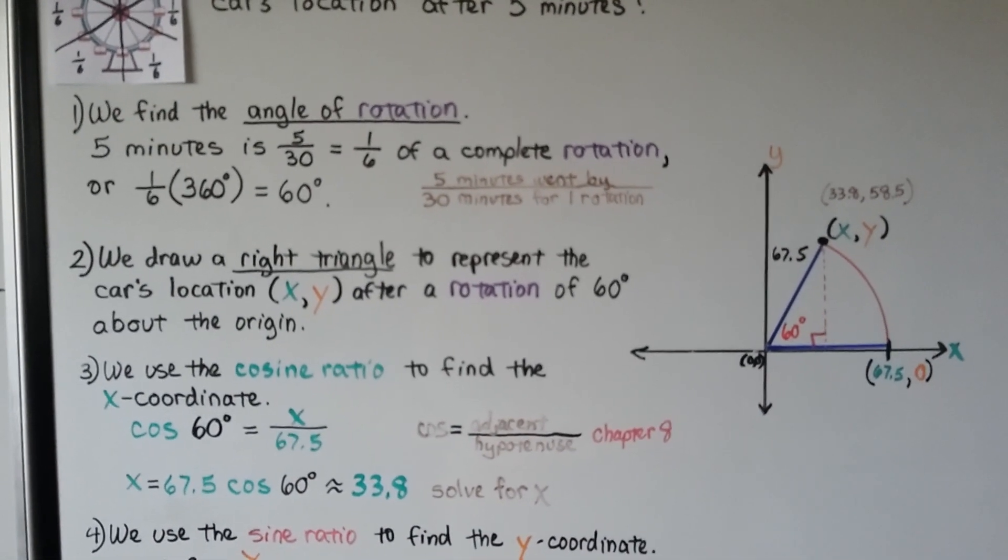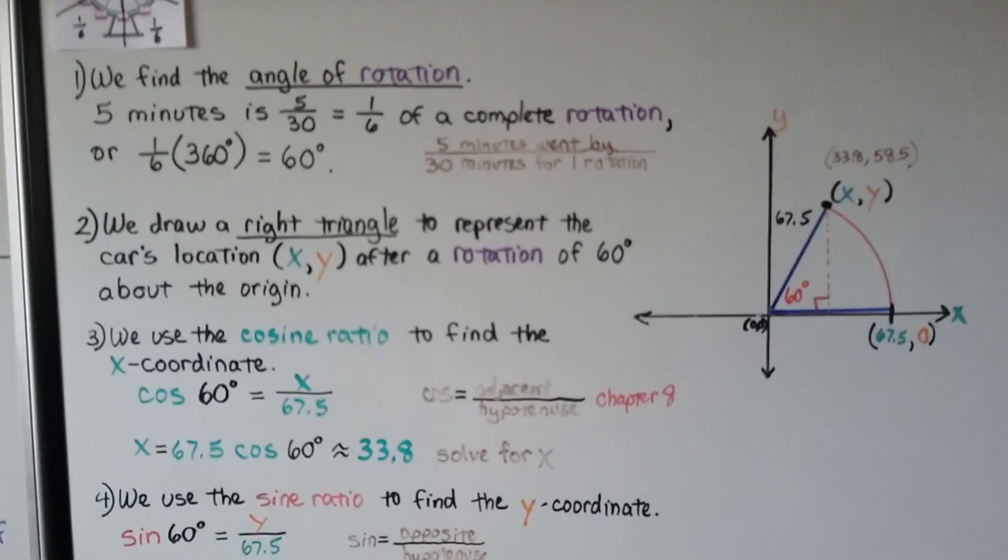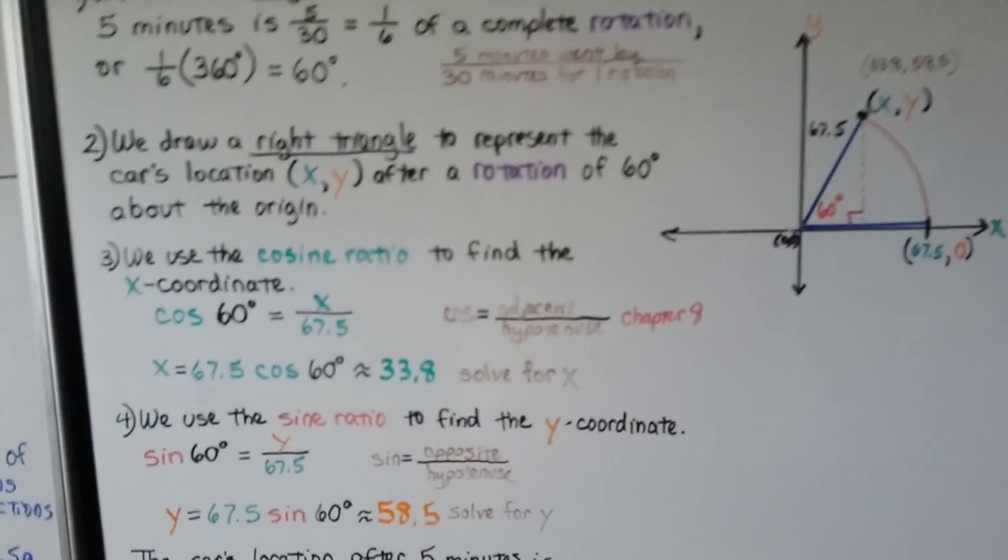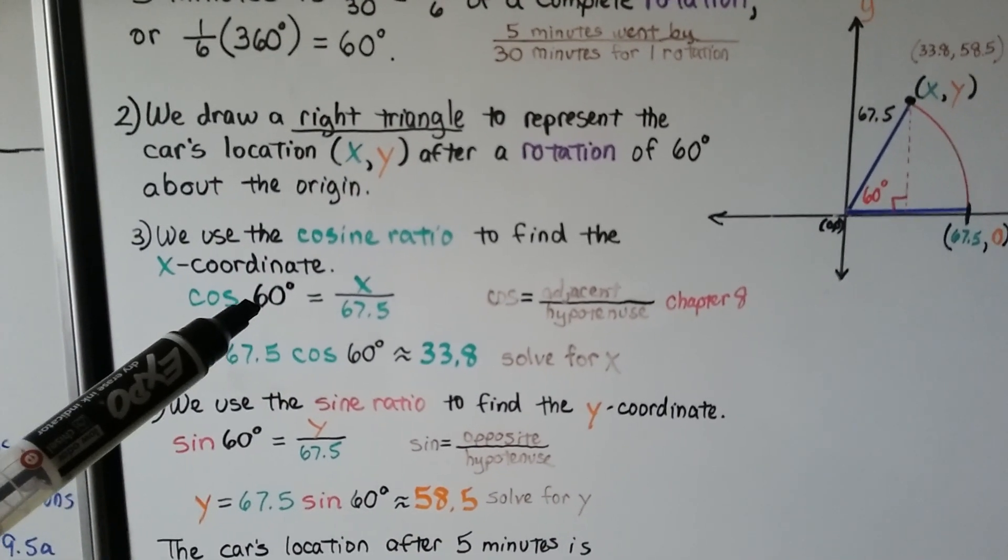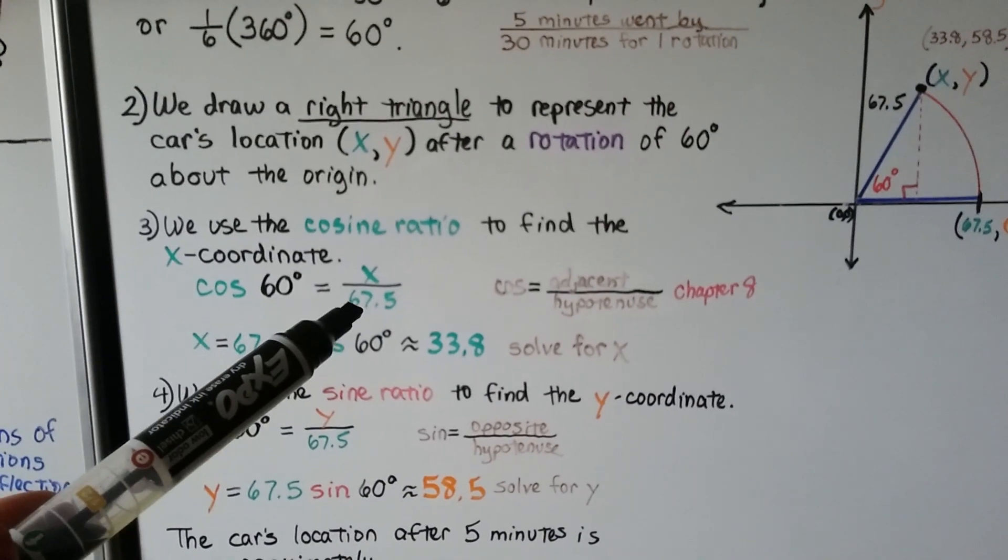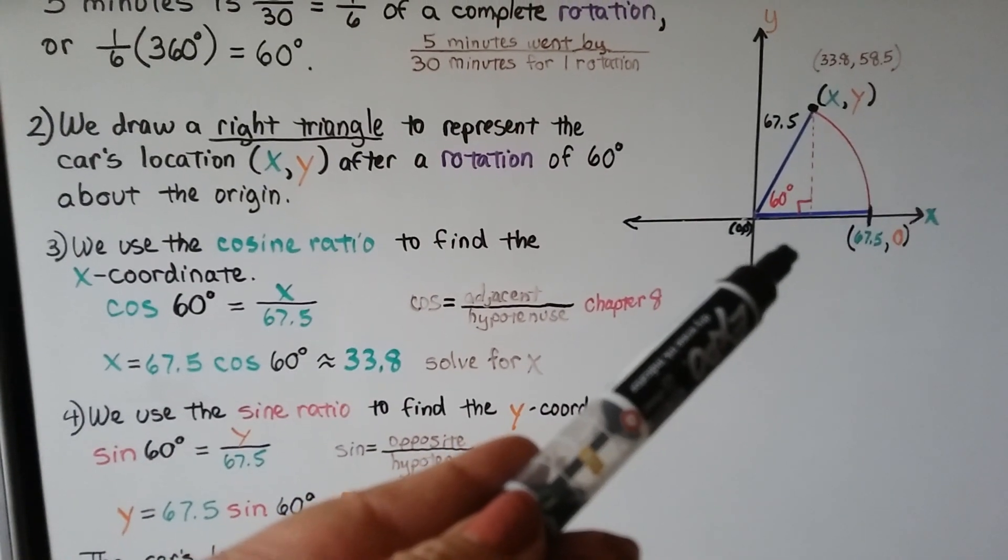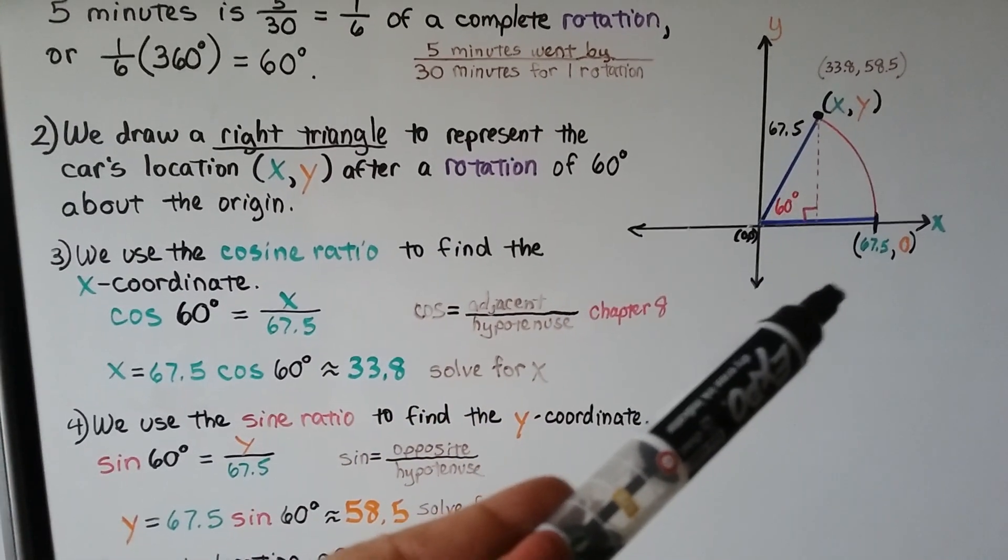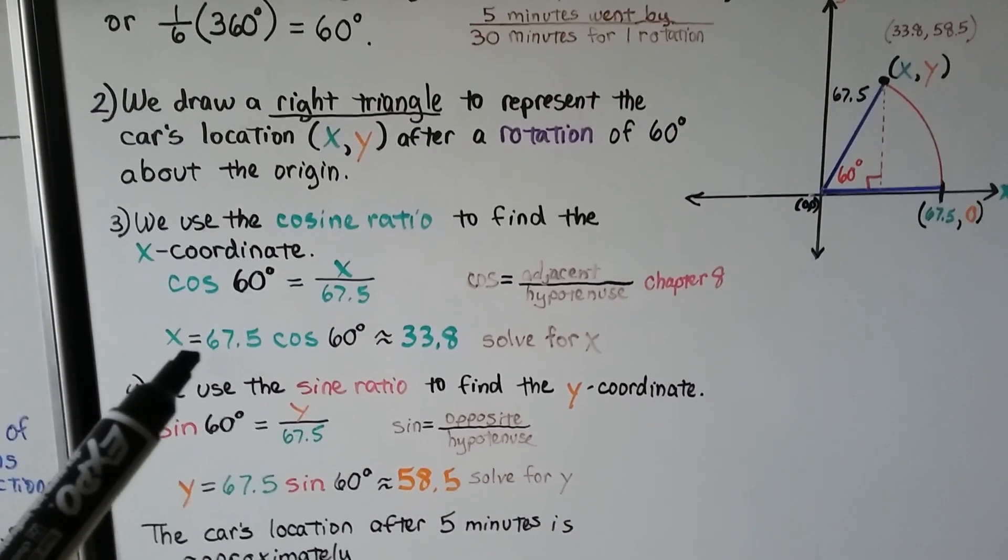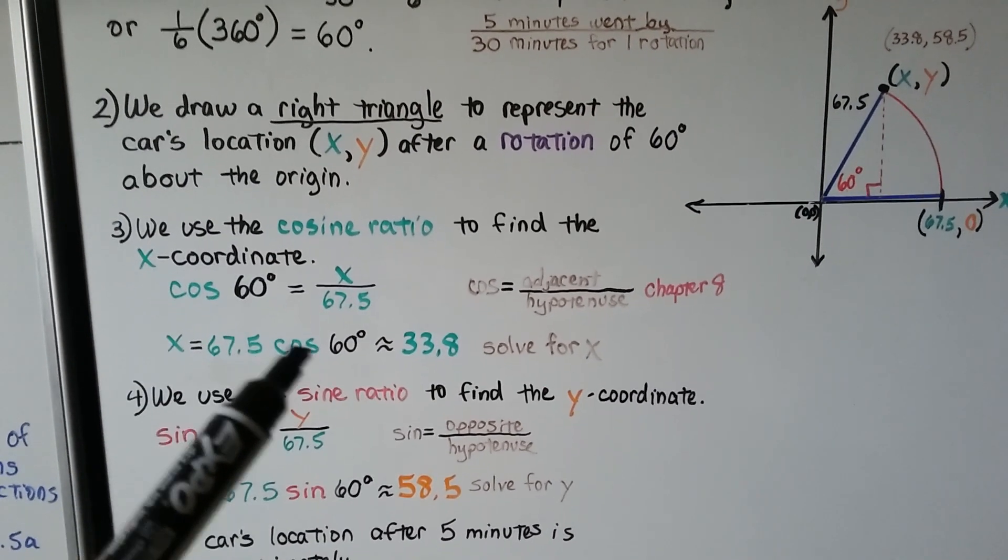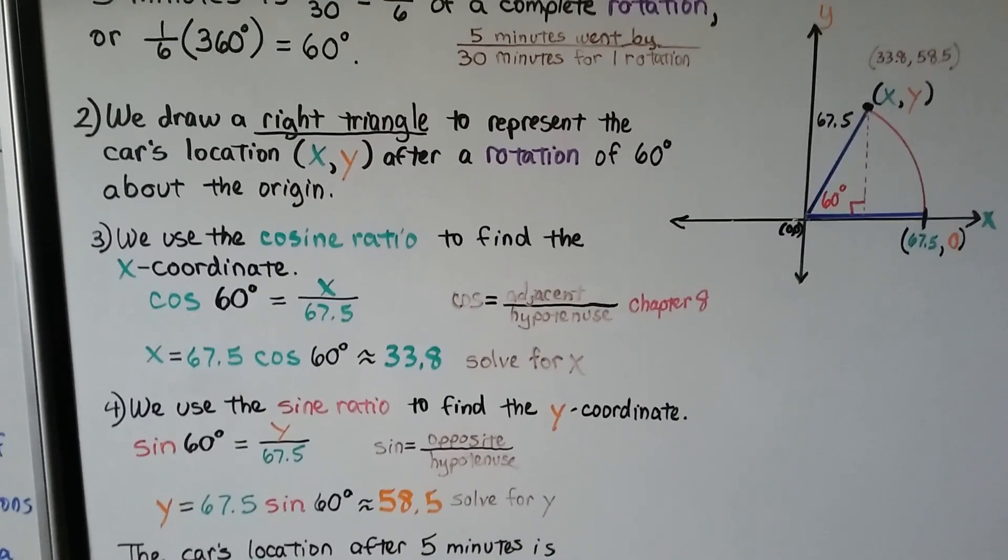After a rotation of 60 degrees about the origin, right here. And we use the cosine ratio to find the x coordinate. So remember using your SOHCAHTOA. So the cosine of 60 degrees is equal to x over 67.5, that would be the adjacent over the hypotenuse. So we'd have x over 67.5. And using our calculator, we find 67.5 cosine of 60 degrees is approximately 33.8, solving for x.